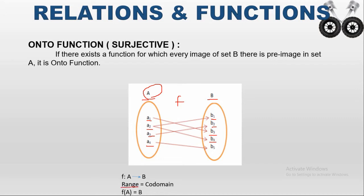The range is the corresponding output of elements in set A. For A1 the output is B3; for A2 the outputs are B4 and B1; for A3 the output is B2; for A4 the output is B5. So the range is {B1, B2, B3, B4, B5}. The co-domain is all elements presented in set B. Here the range and the co-domain are equal, so the function A to B is called an onto function.